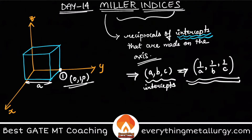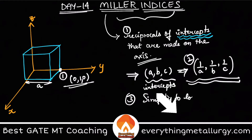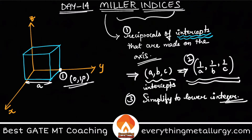Let's simplify that. The first step is to calculate the intercepts. The second step is to just reciprocate them. And finally, the third step is to simplify to lower integers. You may have higher integers or fractions, so you simplify them to lower integers. That's why in many books the planes or directions are mentioned in terms of ones and zeros.